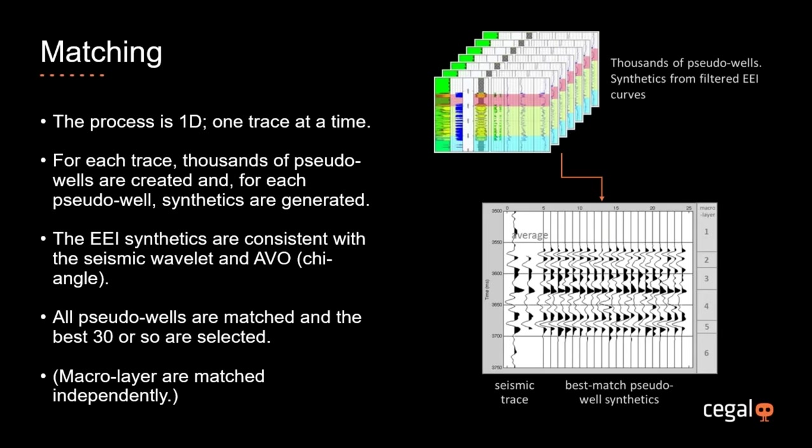We now proceed to the matching step. The process is entirely one-dimensional, operating on one individual trace at a time without influence from surrounding traces. For each pseudo well, we generate a synthetic tailored to match the seismic data — with the appropriate seismic wavelet — generated using extended elastic impedance with the appropriate chi angle. All pseudo wells are matched with the seismic data and we select typically the best 30 to proceed to the averaging process.